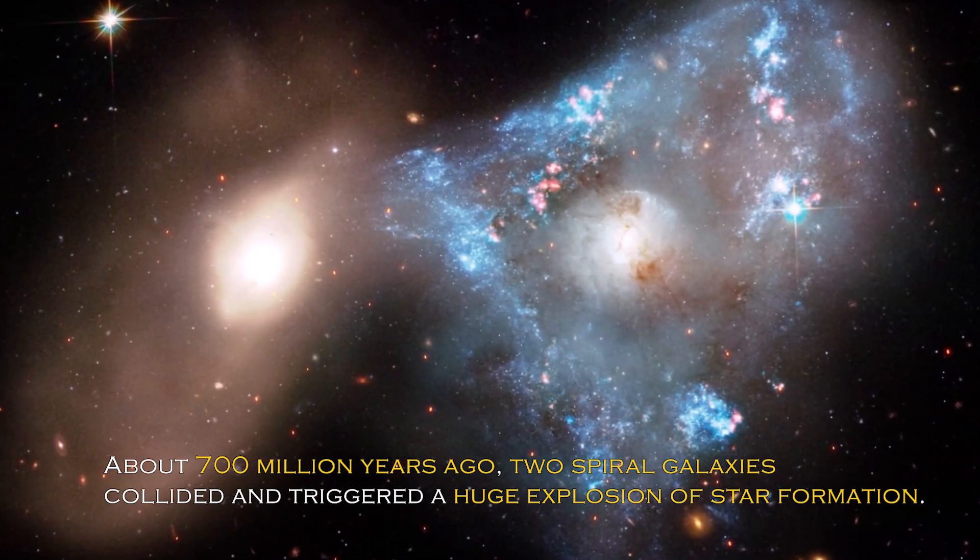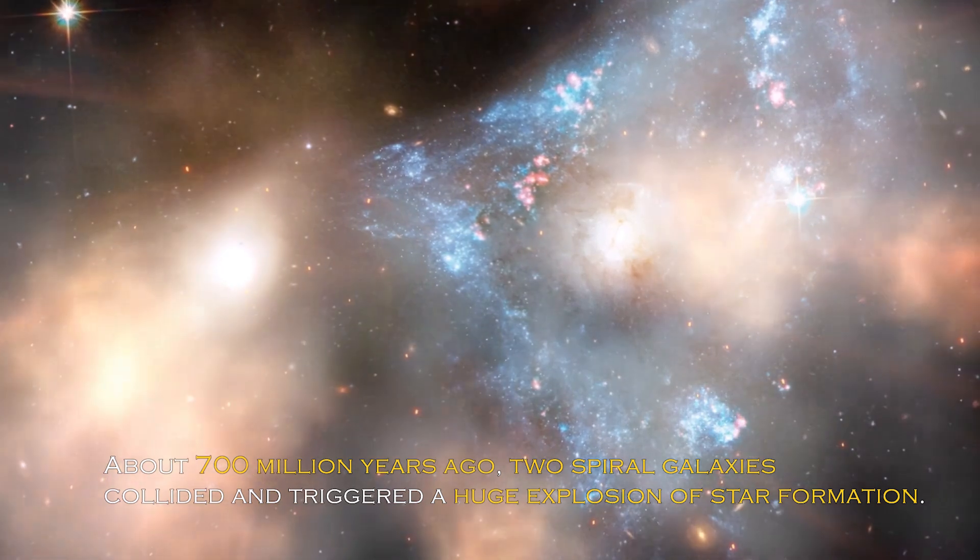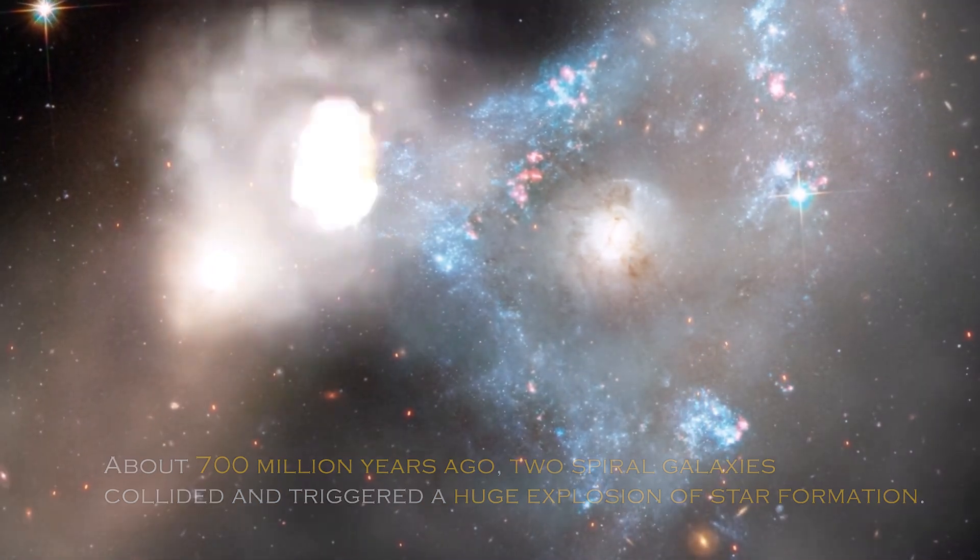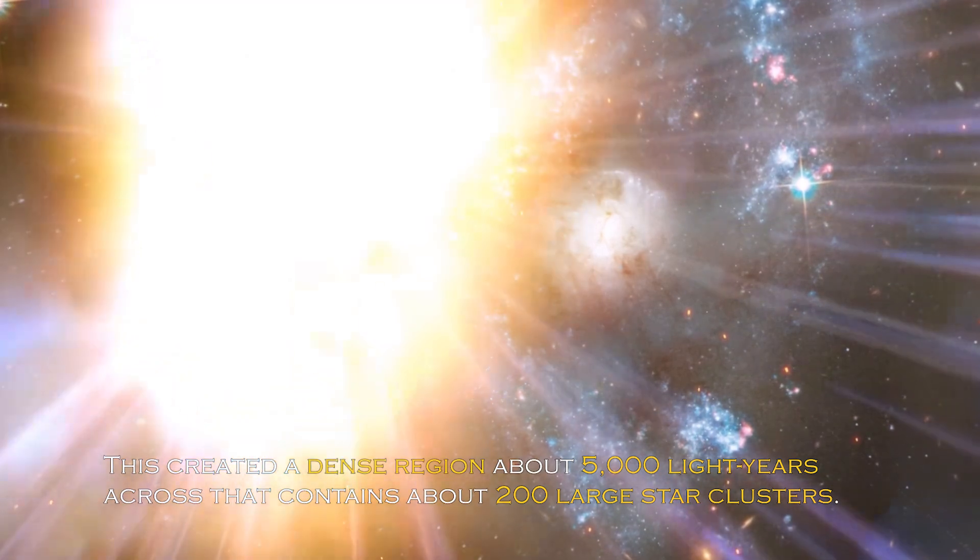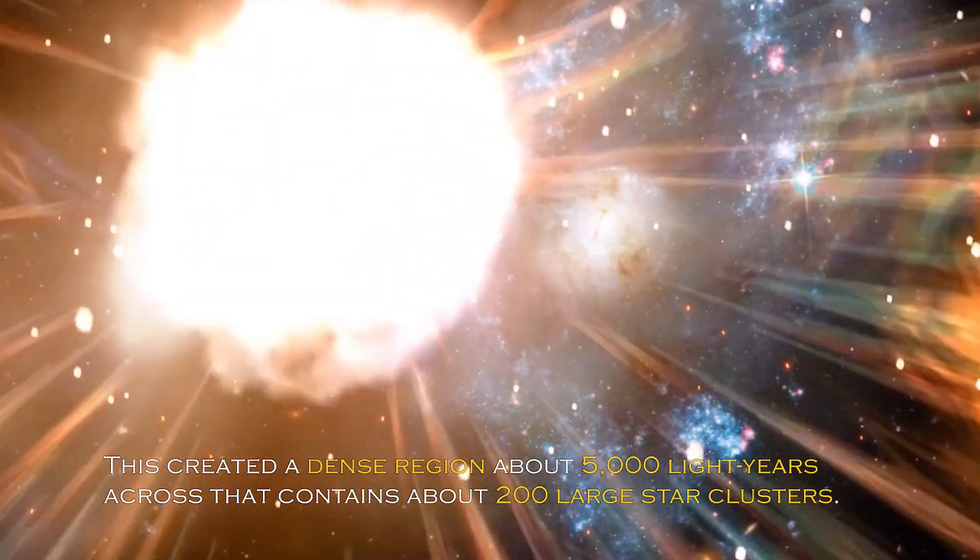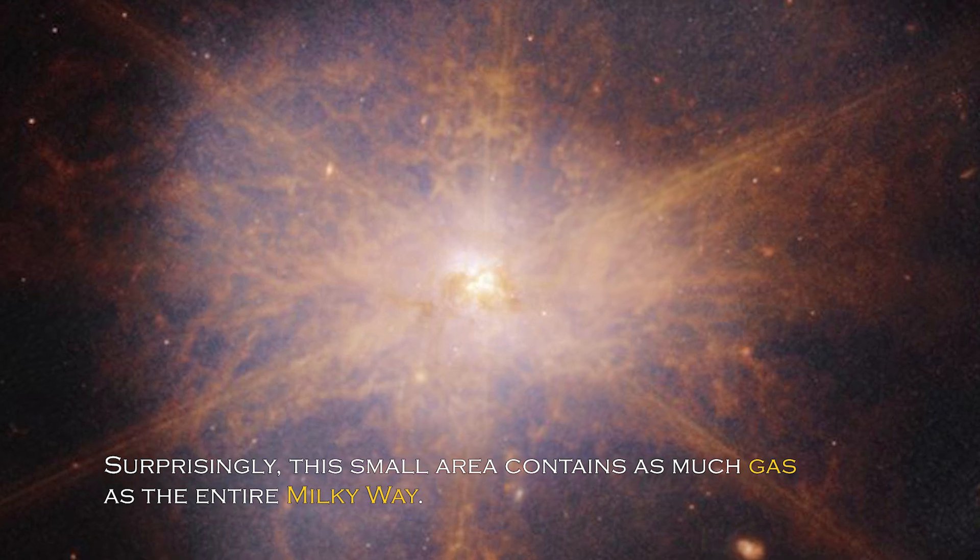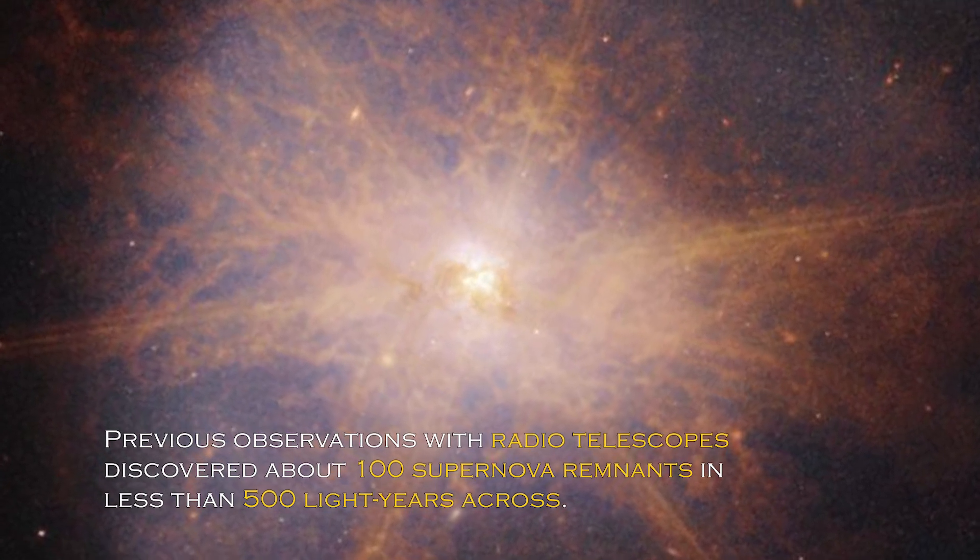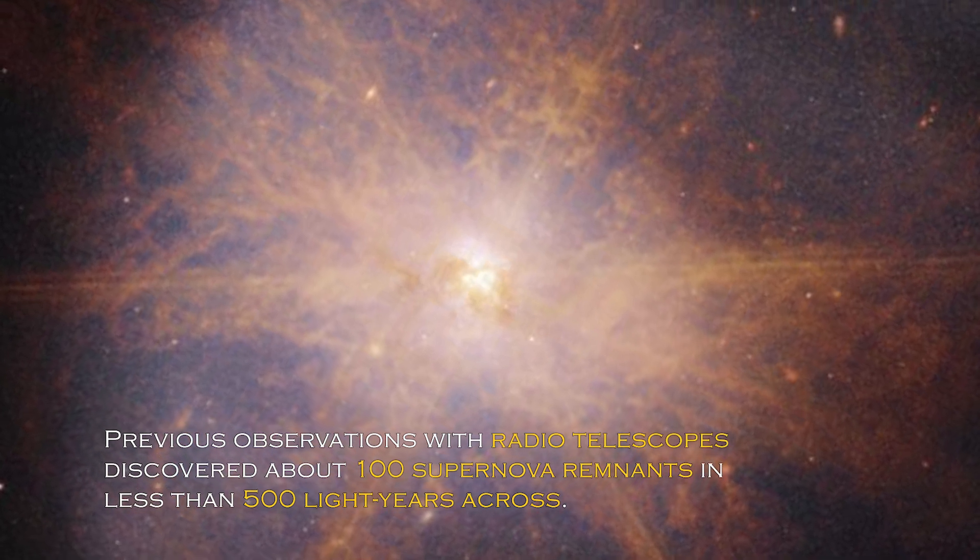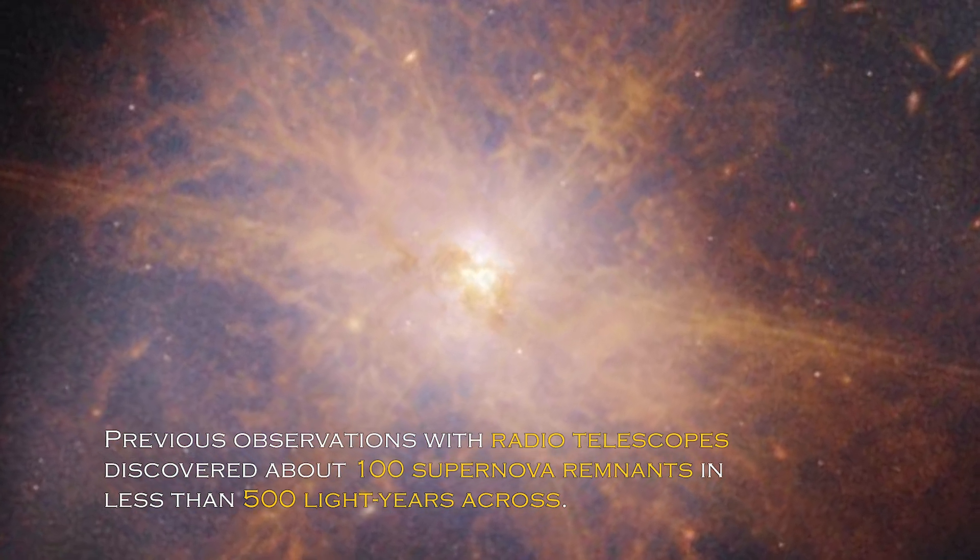About 700 million years ago, two spiral galaxies collided and triggered a huge explosion of star formation. This created a dense region about 5,000 light-years across, that contains about 200 large star clusters. Surprisingly, this small area contains as much gas as the entire Milky Way. Previous observations with radio telescope discovered about 100 supernova remnants.